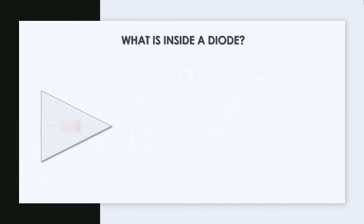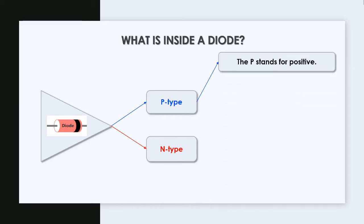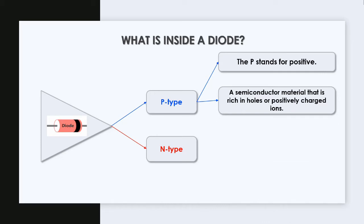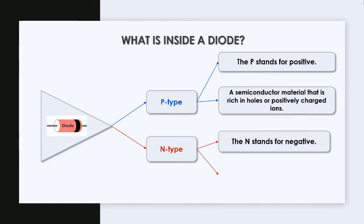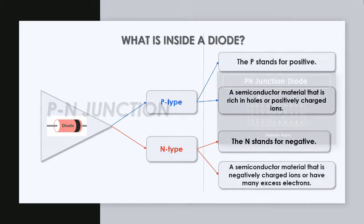Now, what is inside a diode? There are two things inside a diode. One is a P-type semiconductor and the next one is an N-type semiconductor. The P stands for positive — P-type semiconductor is a material that is rich in holes or positively charged ions. The N in N-type stands for negative — the N-type is a semiconductor material that has negatively charged ions or many excess electrons.